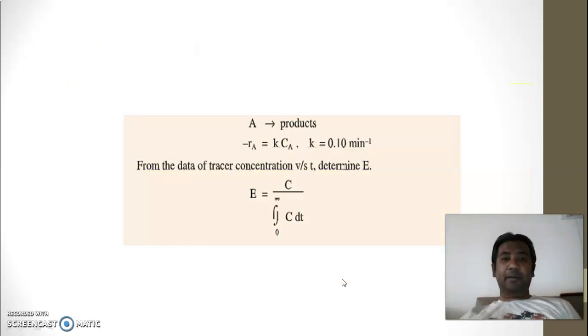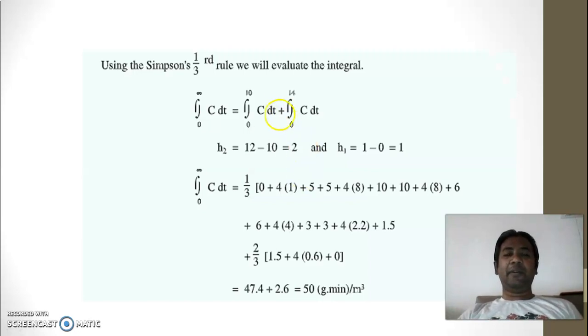So first of all, let us understand, we will require value of E exit age distribution to find the mean conversion. So E value is not a single value, it is associated with every C value. So E exit age distribution is individual C value divided by total concentration of the effluent. So what we will do, we will find out the total concentration of the effluent.